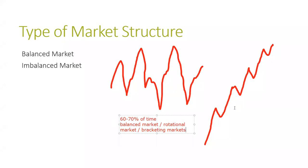The imbalanced mode is comparatively rarer, with a probability of around 30 to 35% of the time. So balanced markets make up approximately 65% of the time, and imbalanced trending markets account for the remaining 35%.